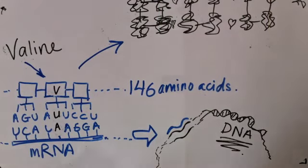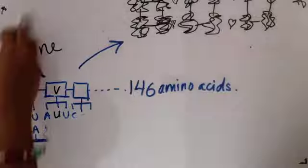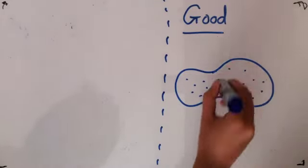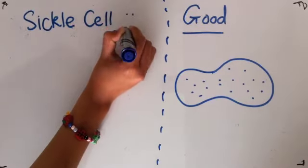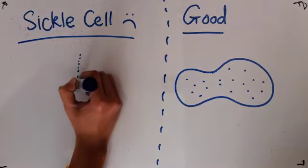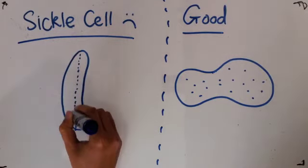This sticks the hemoglobin together in a really long chain, like a fiber, and this pulls the cell out of its usual biconcave shape, so it takes up the sickle shape. Like that.